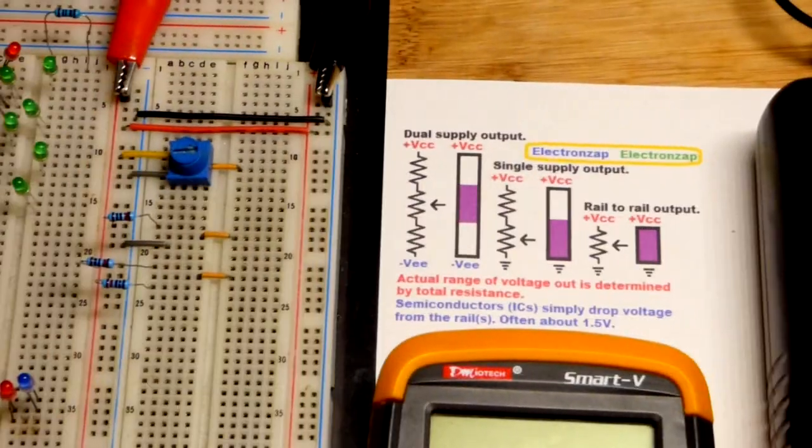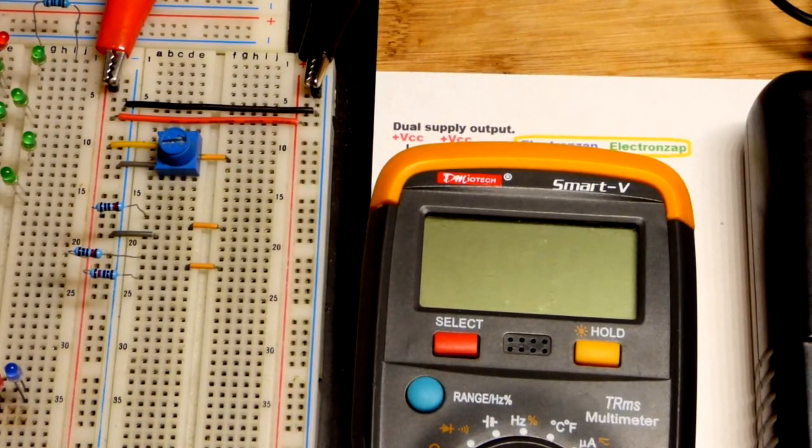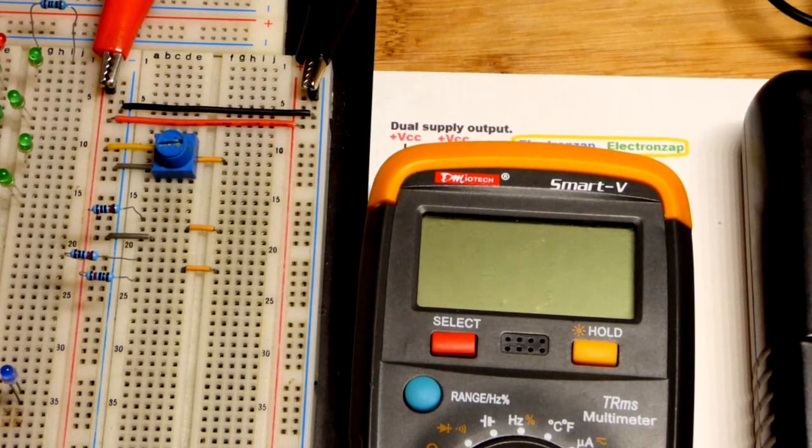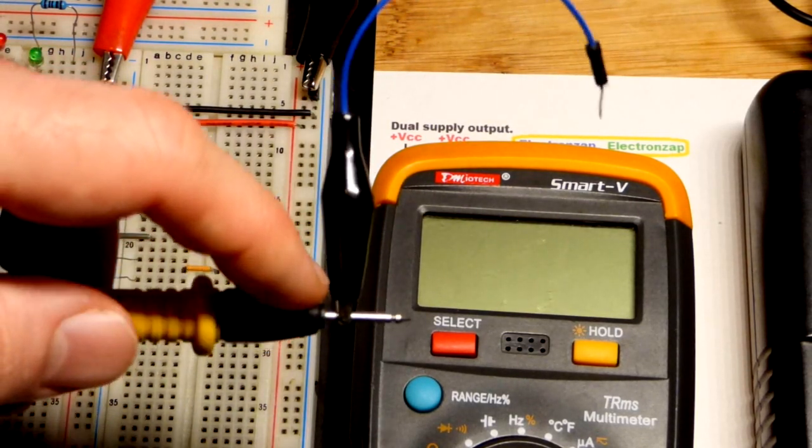So power supply is set to 5 volts right there and it is on. And earlier I didn't have any power because I forgot to turn the power supply on. But in any case we have the probes here, I clipped an alligator clip to them.